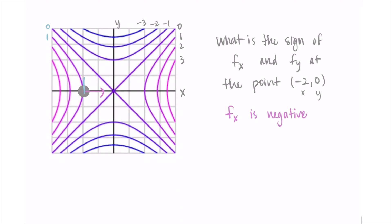Then we look in the y-direction — going straight up. Something unique is happening: we are walking tangent to the contour. The contour is right here and we're walking tangent along it. At that point, the partial derivative is actually 0 because we're tangent to the contour. Anywhere we're walking directly along the contour, those will have partial derivatives of 0.